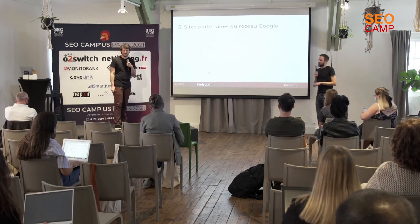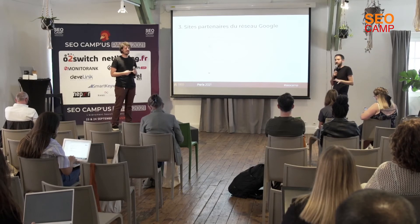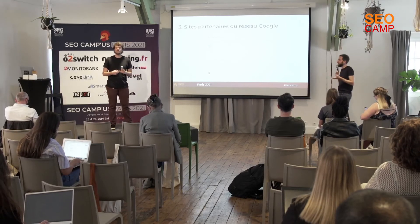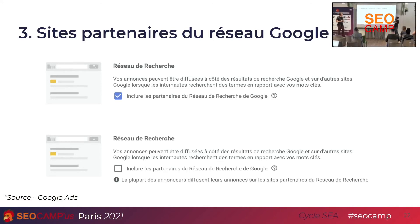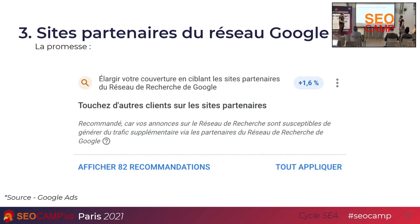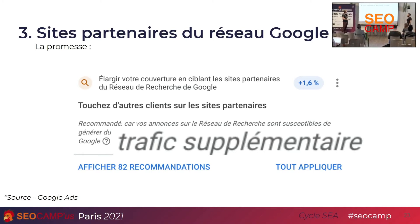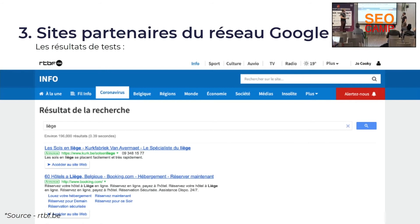Le troisième point, ce sont les sites partenaires sur le réseau Google. L'objectif, c'est de se dire : est-ce que ça fonctionne ? Par défaut, quand vous créez une campagne, il va automatiquement cocher « Inclure les partenaires du réseau de recherche ». Si on le décoche, il nous dit : « Attention, vous ne faites pas comme tout le monde — la plupart des annonceurs utilisent cette option. » La promesse, c'est de toucher d'autres clients sur les sites partenaires et un trafic supplémentaire, ce qui est certes un peu vrai, mais pas forcément à bon escient.